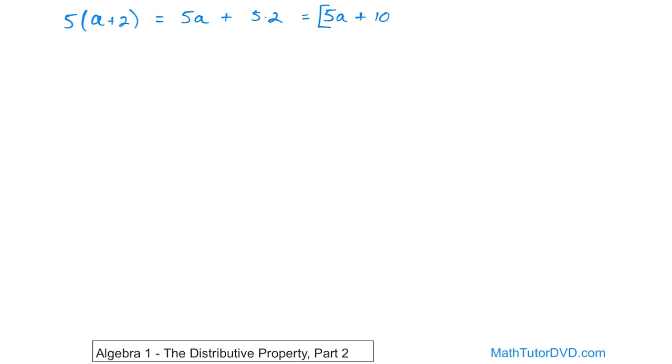But really this is 5a, which is a number times a variable, but you don't know what a is. You have no idea. And then you have a number here and they're added together. So really you can't do anything further with it because these are different things. This is 5 times a variable and this is a straight number. So these are what you call unlike terms.